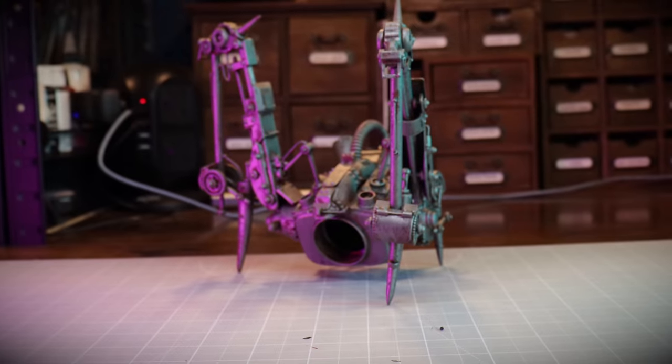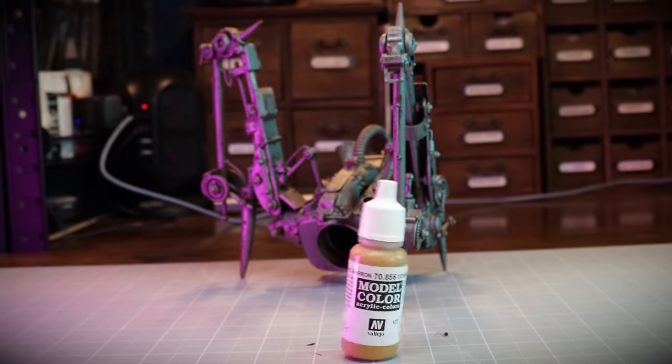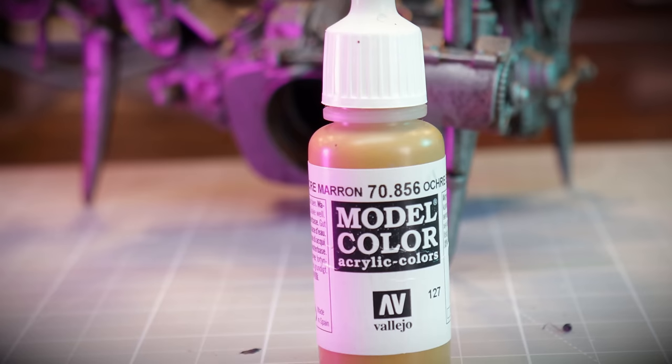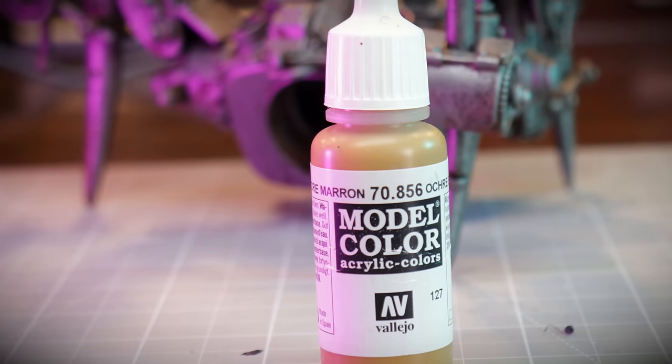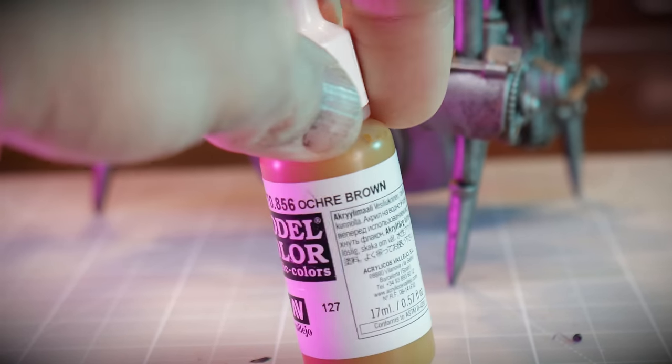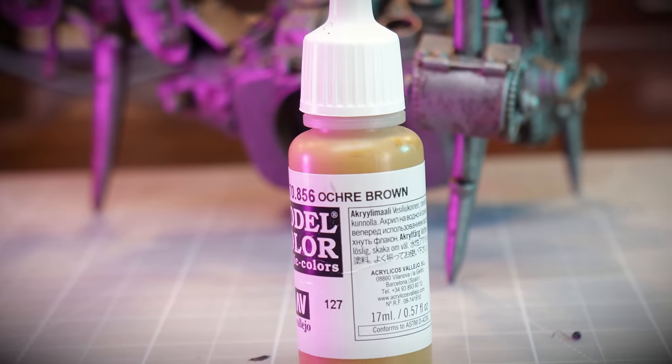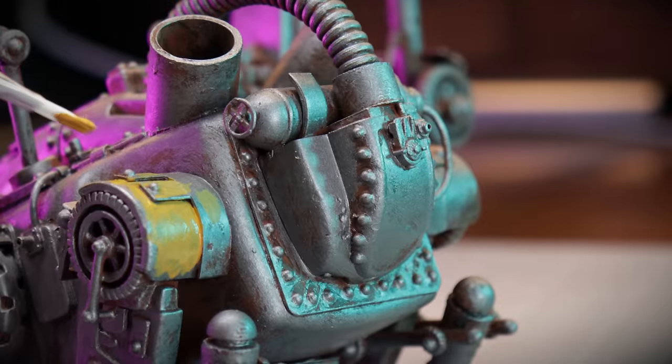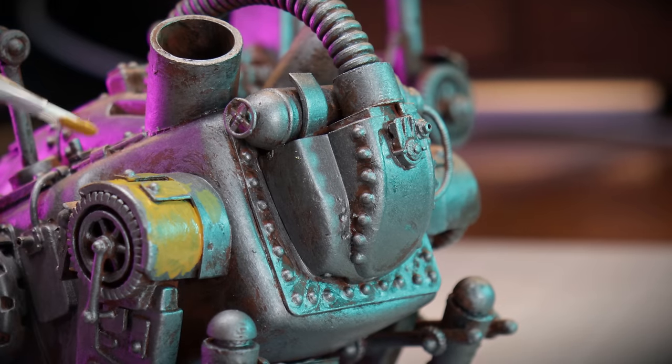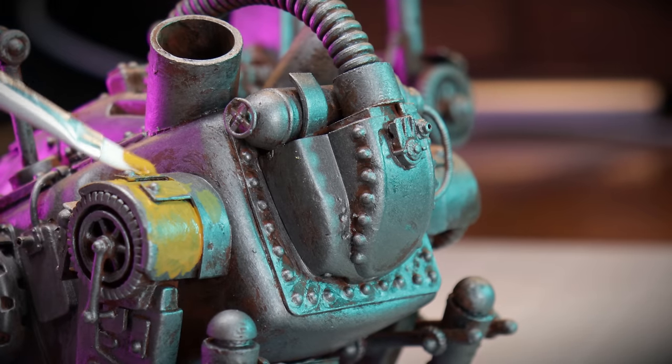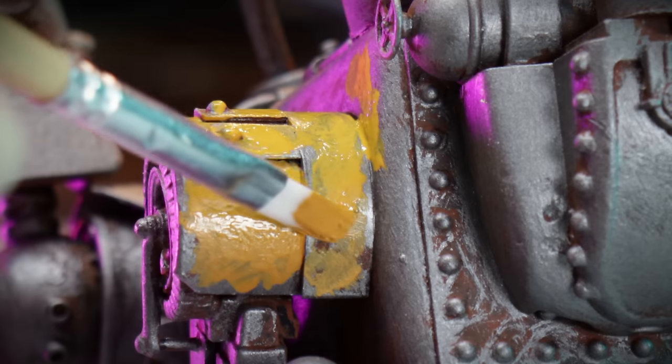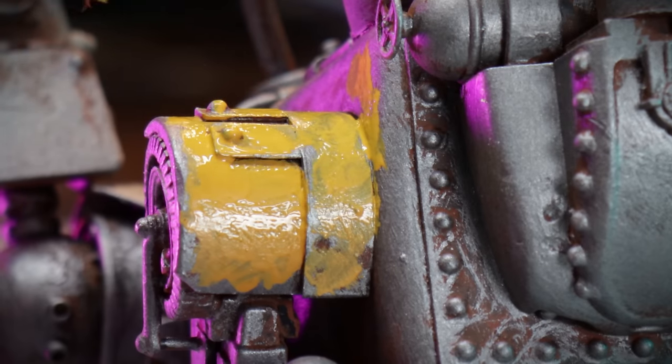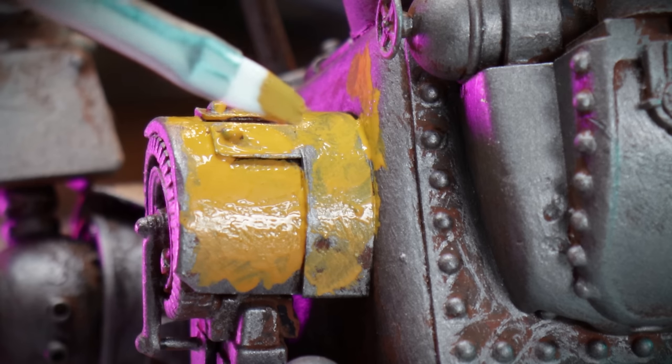I want to paint this thing yellow like a JCB or a JC Bat, as one of my patrons called it, very clever that. When you paint things yellow, don't go for actual yellow, I've gone for ochre brown. And believe me, this took many many coats. Yellow is a nightmare.